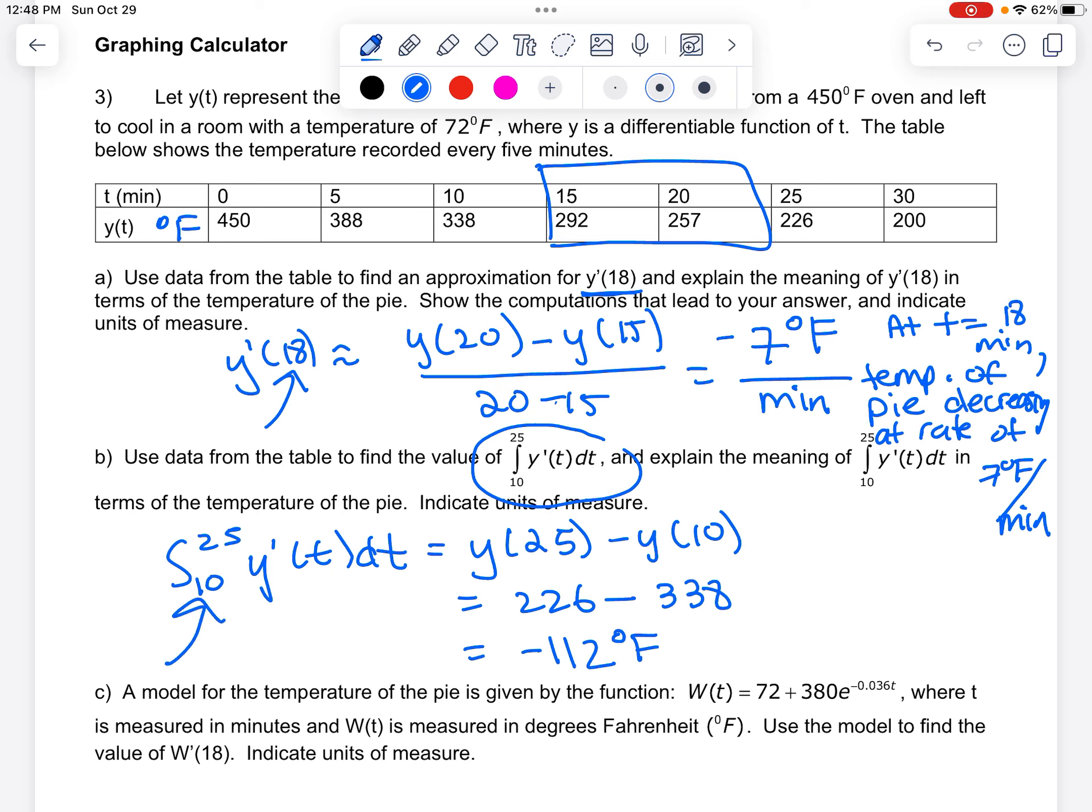right, so an integral is over a time interval. So explain this first. So from t equals 10 to 25 minutes. What are we talking about? This represents temperature of the pie. Went down, right, because it's negative by 112 degrees Fahrenheit. Or you could say dropped or something like that.